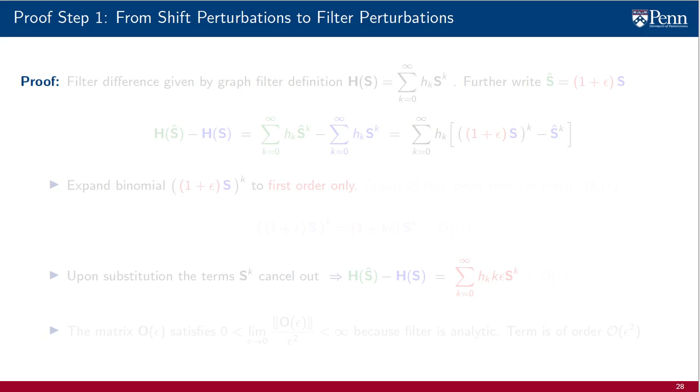We can now start with the proof of the theorem proper. The first step in the proof of this theorem is to translate the perturbation of the shift operator into an expression for the perturbation of the filter operator. To do that, we consider the filter difference Ĥ - H. We write it explicitly in terms of the polynomials with coefficients hₖ that represent the respective graph filters.